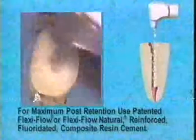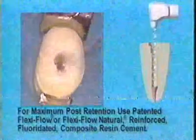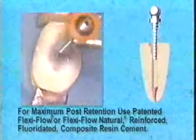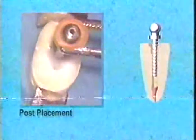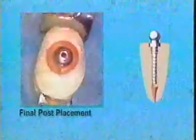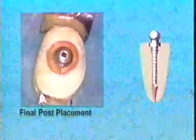Patented FlexiFlow or FlexiFlow Natural in shade Vita A3 fluoride-releasing composite resin cement is now mixed and placed into the canal with the Lentulo spiral. The Lentulo will deliver the cement to the bottom of the post hole. In addition, coat the shank of the post to assure a complete cement interface. FlexiFlow cement gives the dentist approximately three and a half minutes of working time to place the post. The Access Post Overdenture is coated with cement and placed in the canal. Fully seat the post within the countersink preparation. The thick-walled hollow tube releases hydrostatic pressure, allowing placement with virtually no stress or strain to the root.